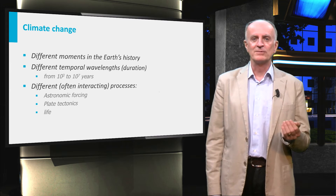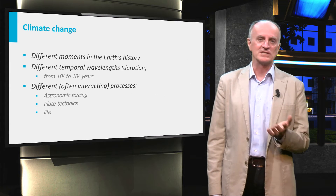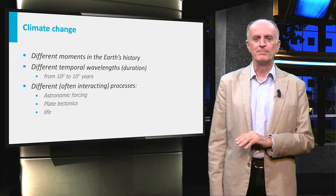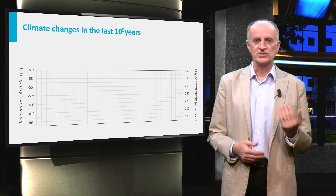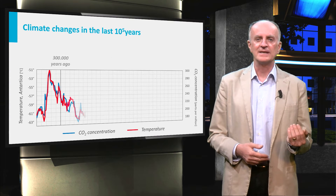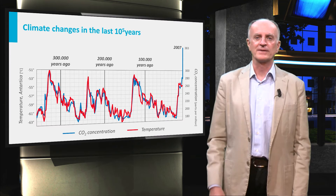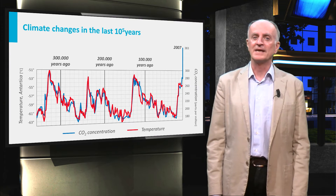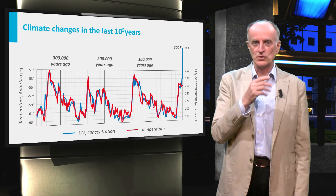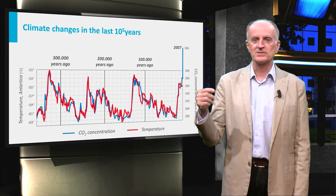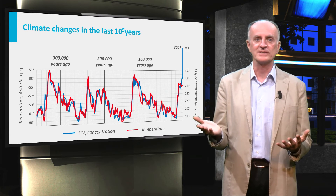We will start with phenomena which have taken place in the recent past, geologically speaking — carbon dioxide. In the plot displayed in the slide, you can see two curves showing the changes in carbon dioxide and in temperatures over the last 400,000 years. The data are obtained from ice cores from Antarctica. The two curves show important oscillations, with temperature values oscillating by nearly 15 degrees — huge changes.